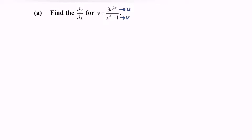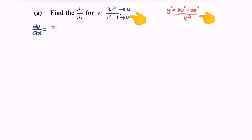So the formula for the quotient rule would be — let's begin. dy/dx is equal to v, which is x squared minus 1, multiplied with u prime. So meaning that we have to differentiate 3 multiplied with e to the power 2x.